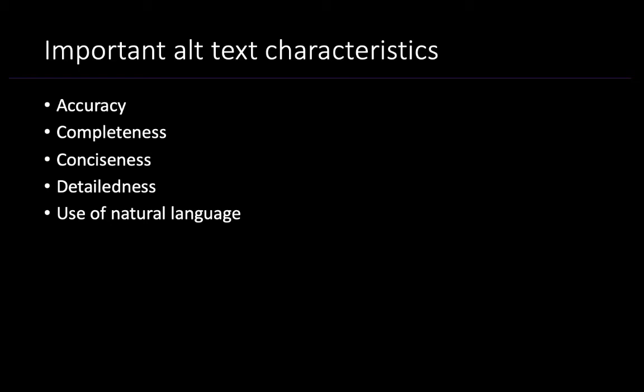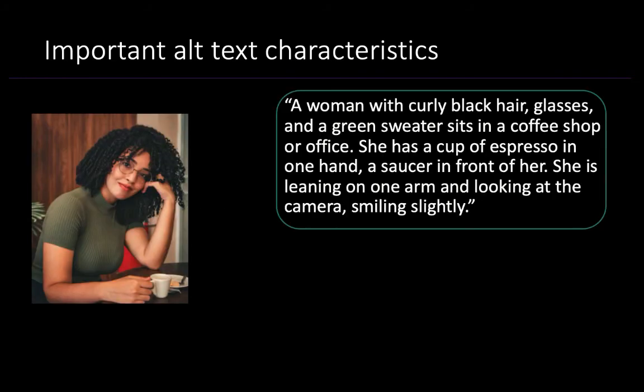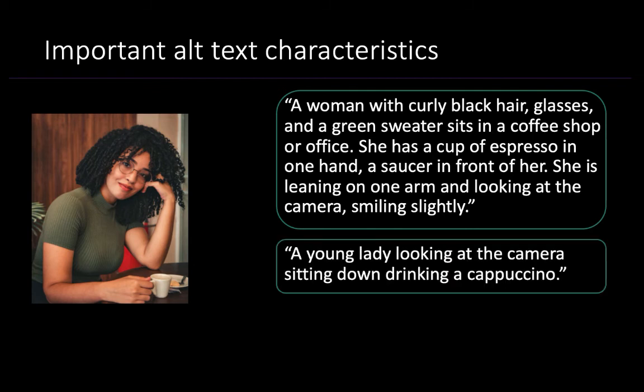You might notice that two of these — conciseness and detailedness — even seem to be in opposition to each other. For the same coffee photo, the two most preferred alt texts were: 'A woman with black curly hair, glasses, and a green sweater sits in a coffee shop or office. She has a cup of espresso in one hand, a saucer in front of her, and she's leaning on one arm looking at the camera, smiling slightly.' The other, nearly equally preferred alt text was: 'A young lady looking at the camera sitting down drinking a cappuccino.'